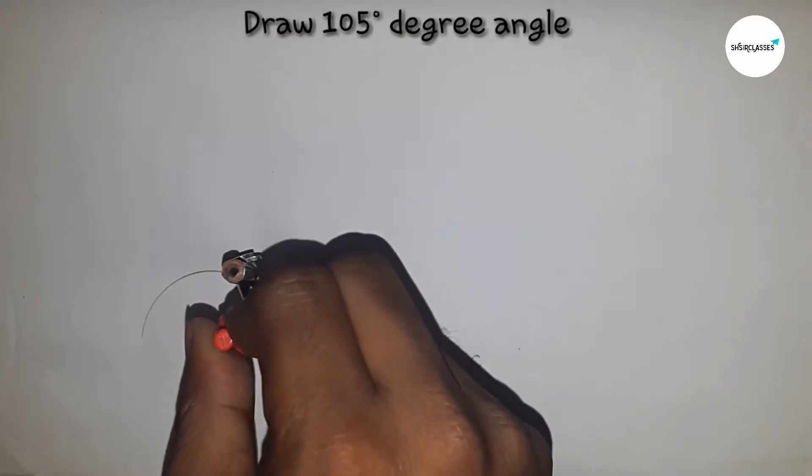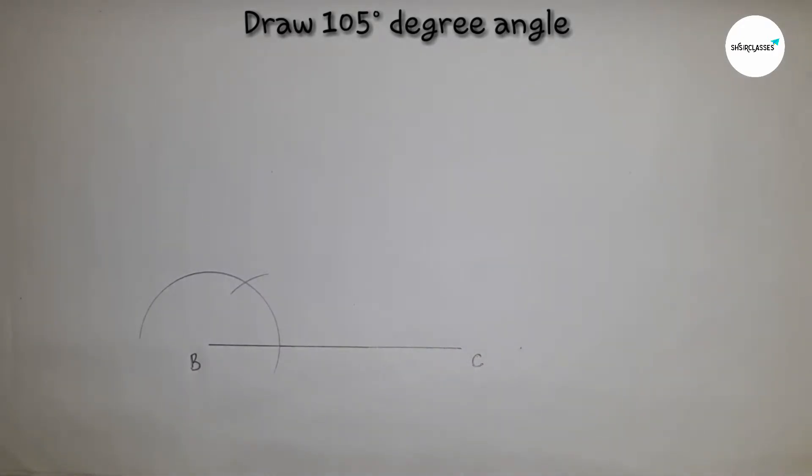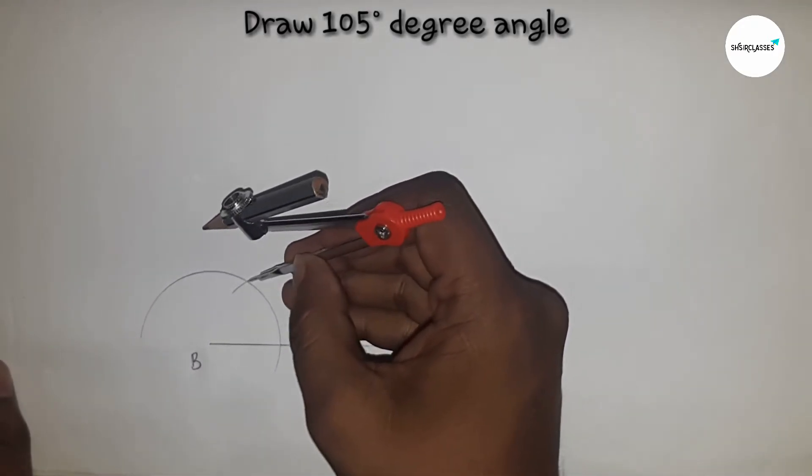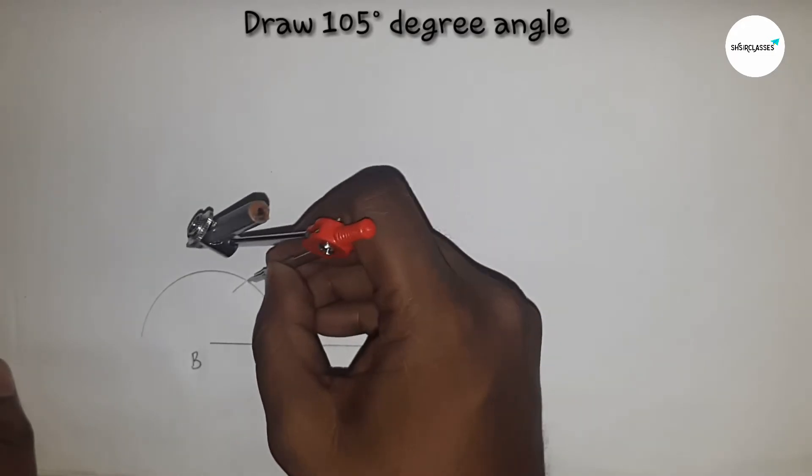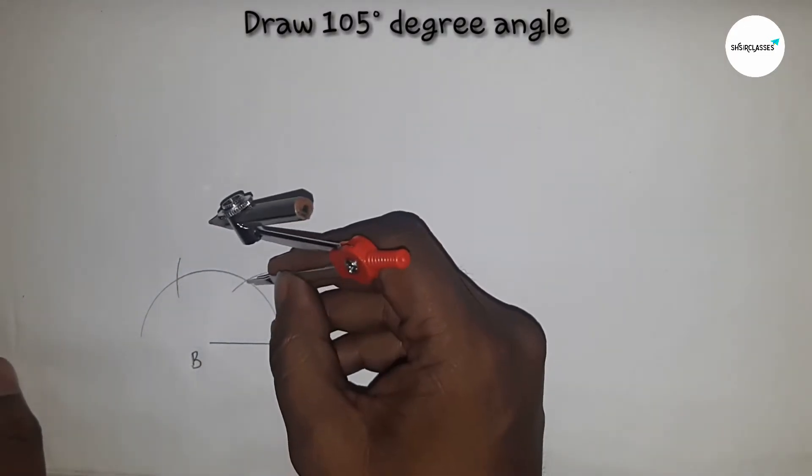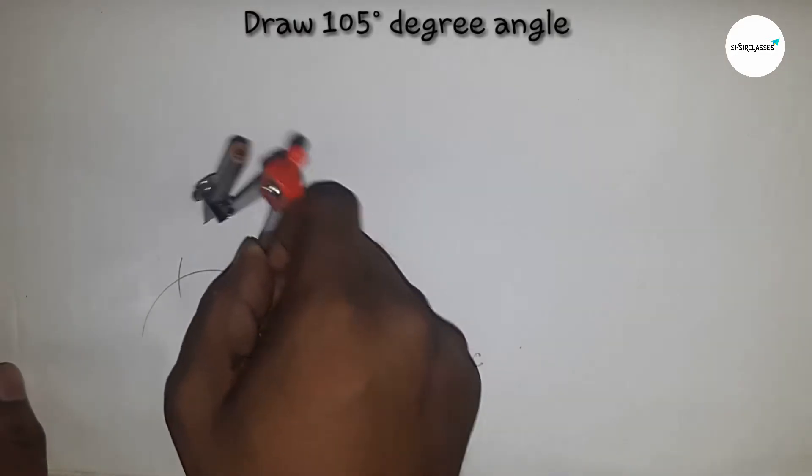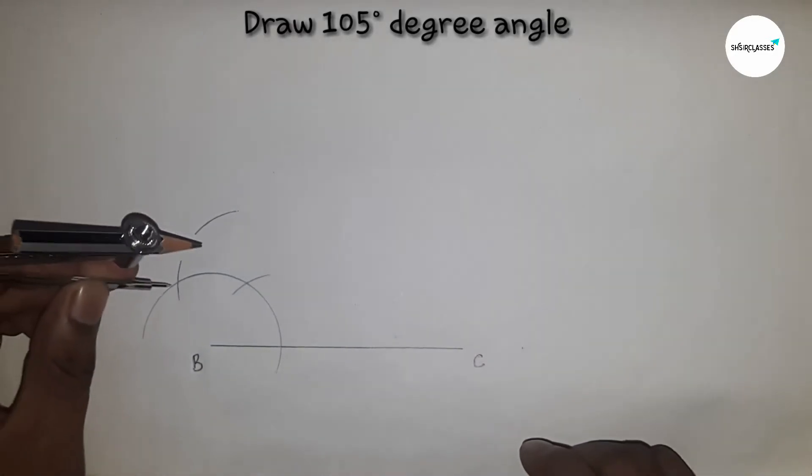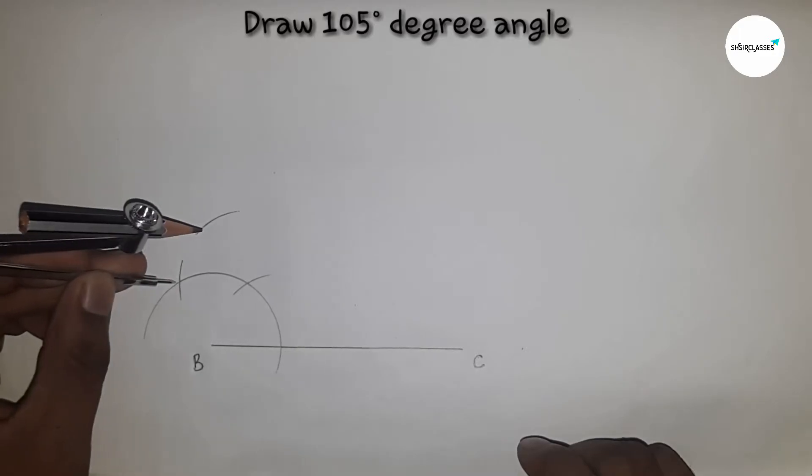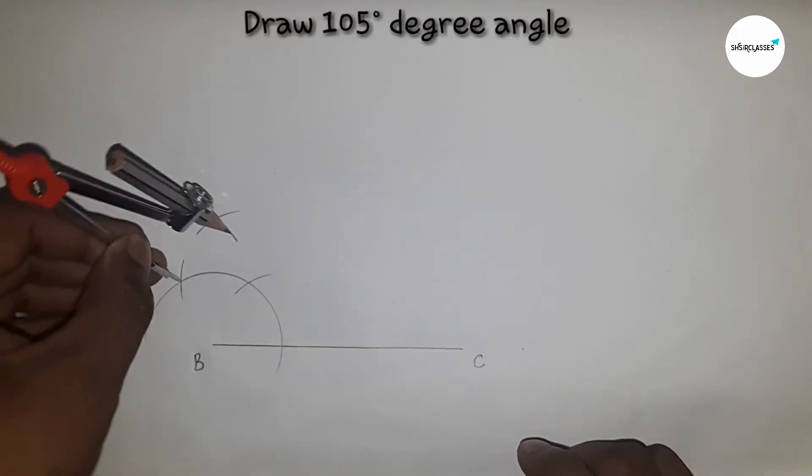Again with same length, putting here and cut the curve by this way. Now I am drawing a curve here, putting this here and drawing a curve which cuts the curve by this way.